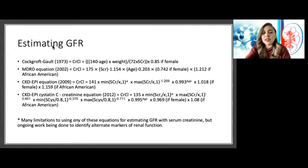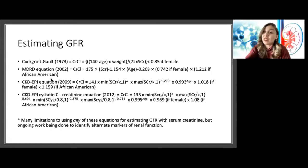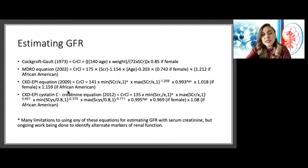Subsequently, the equation that had been used and that the UCSF lab used was the CKD-EPI equation. One thing you'll notice in these subsequent equations is that they substituted a race coefficient.